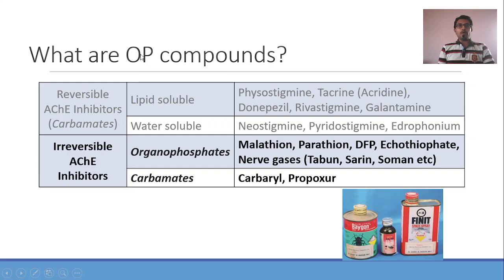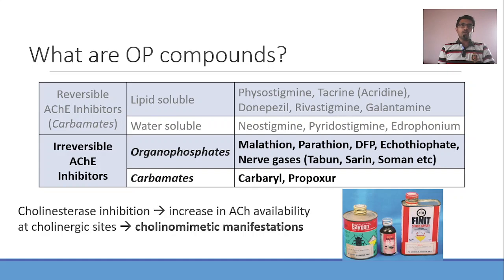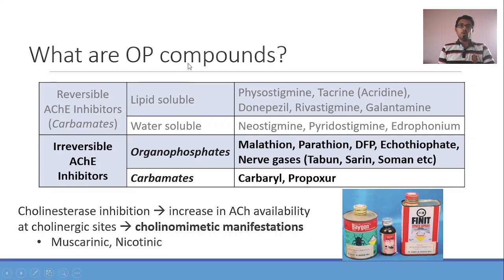When we say OP compound poisoning, we mean both of these — both organophosphates and carbamates. These are irreversible cholinesterase inhibitors. Inhibition of the cholinesterase enzyme will result in accumulation of acetylcholine, because the cholinesterase enzyme is required for breakdown of acetylcholine. If this enzyme is inhibited, there is accumulation of acetylcholine, which accumulates in and around cholinergic receptors — the two types being muscarinic and nicotinic. This will lead to manifestations.